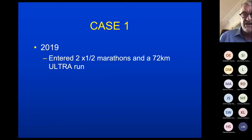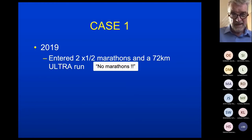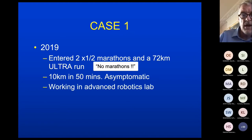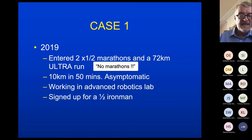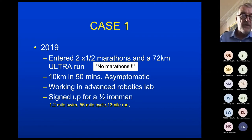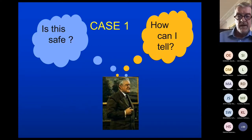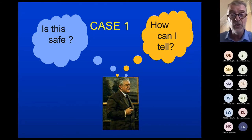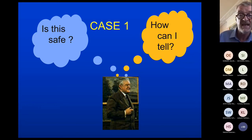In 2019 he didn't run a marathon — he entered two half marathons and went on to a 72-kilometre ultra run. No marathons though. He was running reasonably well: 10K in 50 minutes, asymptomatic, now working in an advanced robotics lab. He decided to sign up for a half Ironman — a 1.2 mile swim, 56 mile cycle, and 13 mile run. That leads to the question: is this safe? He's obviously ramping up his exercise. I try to talk through with patients the potential risks and benefits; it's their decision, not mine.